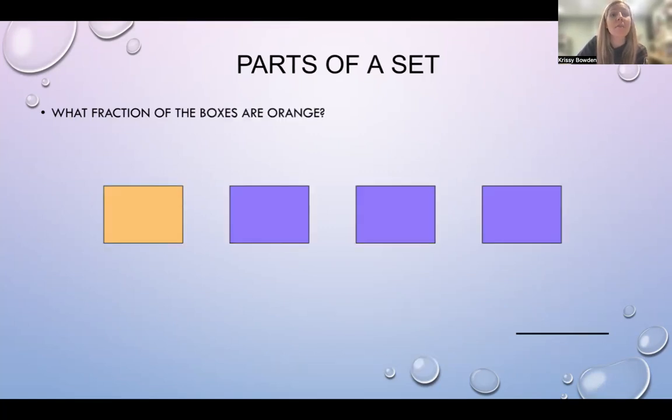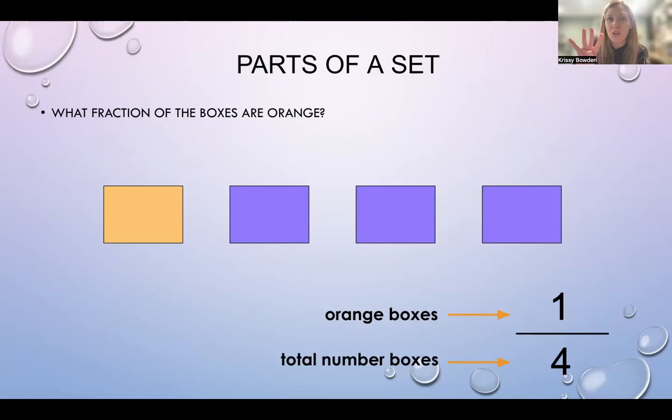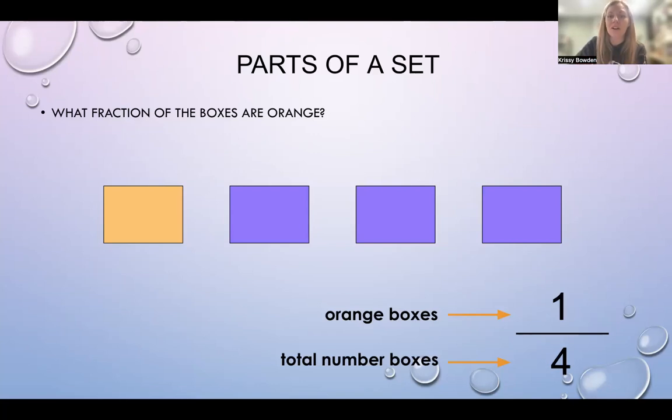What fraction of the boxes are orange? You have four boxes. One is orange. So orange boxes, there's one, total number of boxes in all are four. We say that as one fourth, or you can also say that as one quarter. There are four quarters in one dollar. One out of the four parts of a whole.